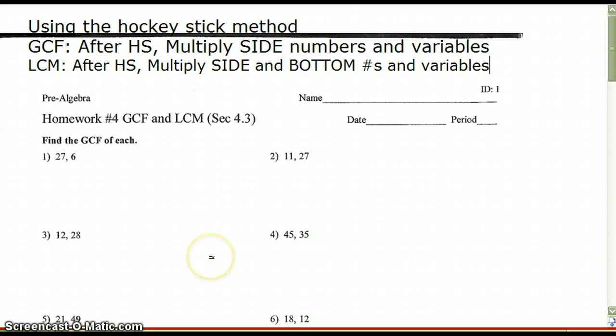So in number one, I'm going to do just a few from the worksheet here. That was the homework for number four. In 27 and 6, I would do upside down dividing. Both the numbers can be divided by 3 and I would write 3 right there. Then I would divide those numbers. 27 divided by 3 gives me 9. 6 divided by 3 gives me 2.